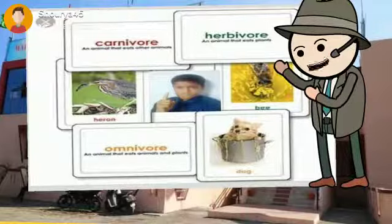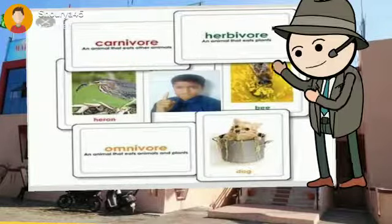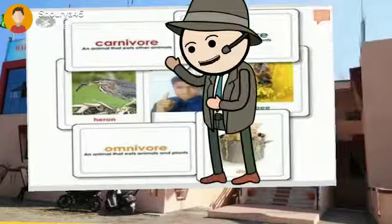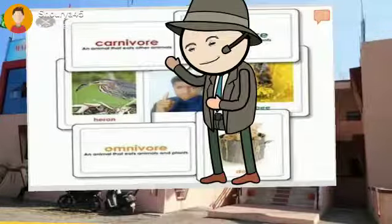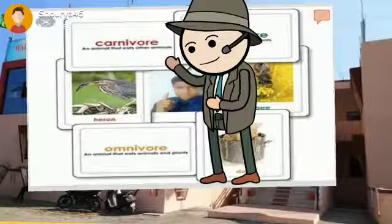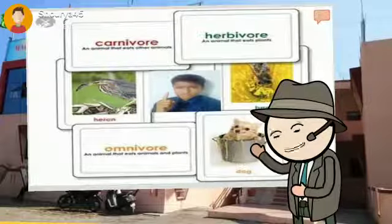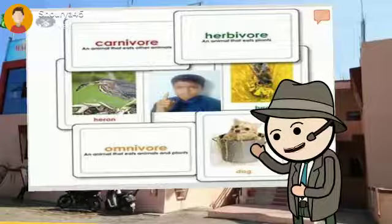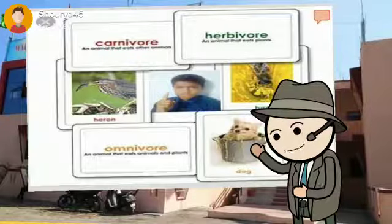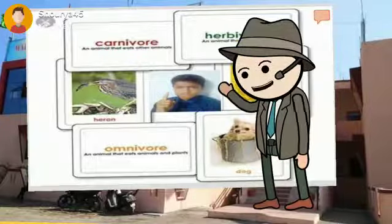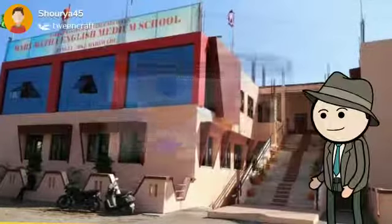Let us see an example of each. Herbivore — bee. Carnivore — heron. Omnivore — dog. I think now everybody is clear with it.